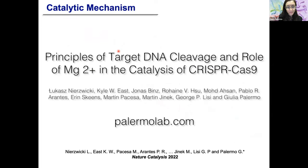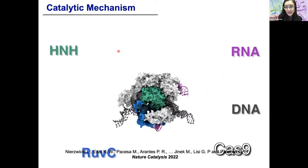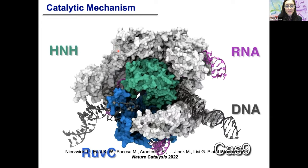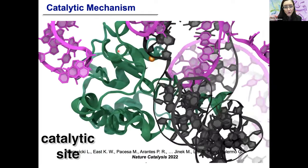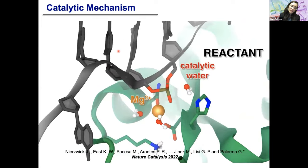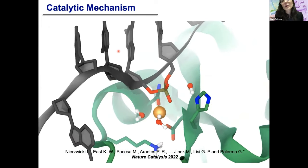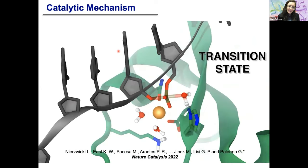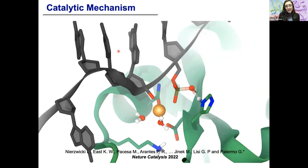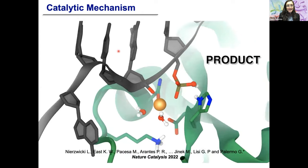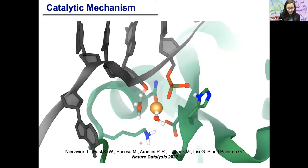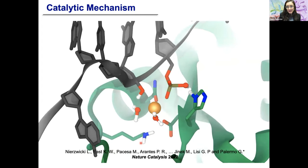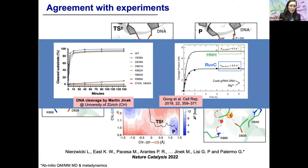A movie is better suited to show how the catalytic mechanism occurs. The system is actually very large — it was the largest system simulated with QM/MM ab initio molecular dynamics at the time. Here you can see how the histidine activates the catalysis: we reach the transition state and then fall into the product, when a lysine located at the bottom of the catalytic site protonates the O3-prime. This was confirmed by experiments by Martin Jinek, showing that the lysine when mutated to alanine actually hampers catalysis.